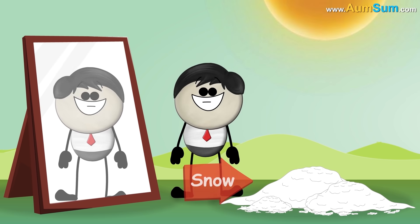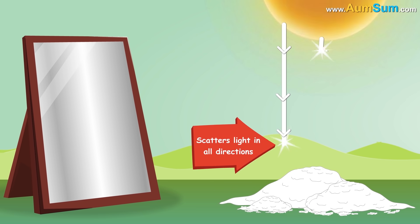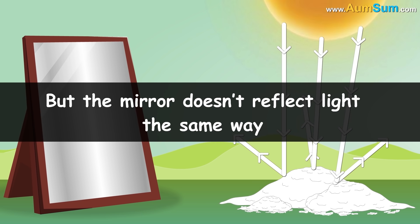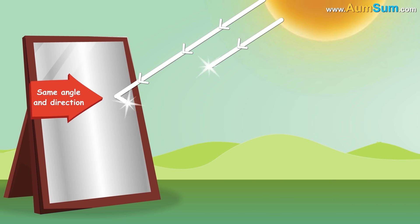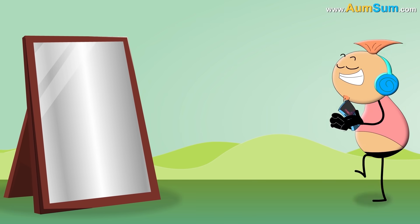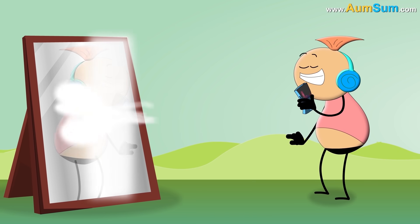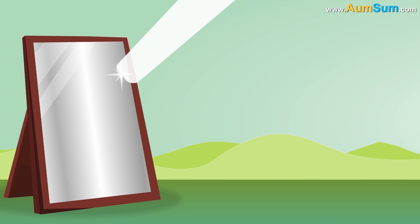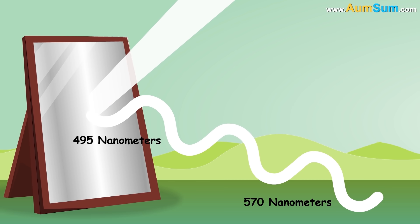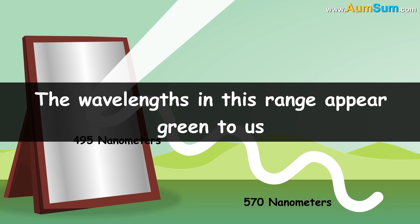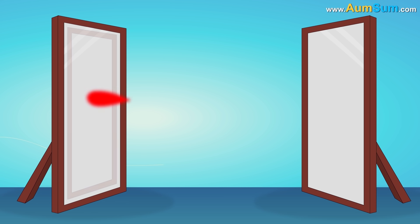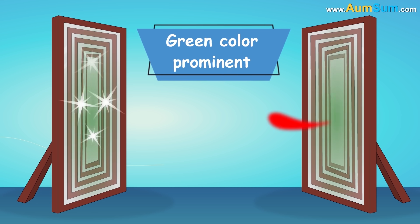Just like snow. But it's not. Snow scatters light in all directions, making it appear white. But the mirror doesn't reflect light the same way. It reflects light at the same angle and direction from which it arrives — this is called specular reflection. Thus, it creates an image of whatever is in front of it. Now, mirrors best reflect light at wavelengths between 495 and 570 nanometers. The wavelengths in this range appear green to us. We can observe this when two mirrors face each other — the same image is reflected back and forth, making the green color prominent.